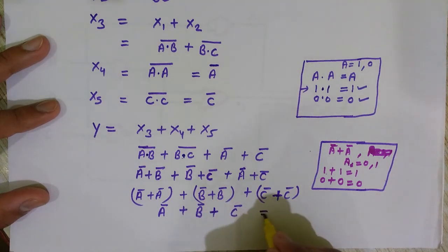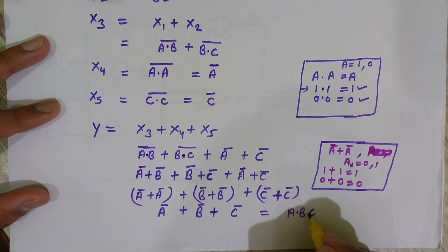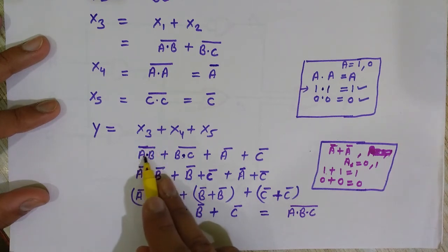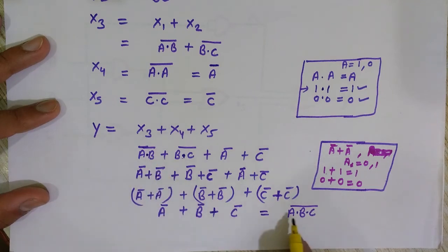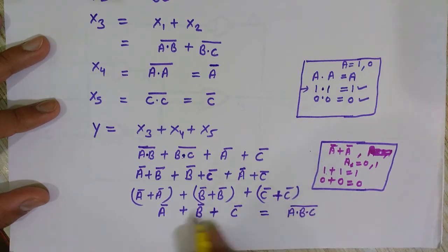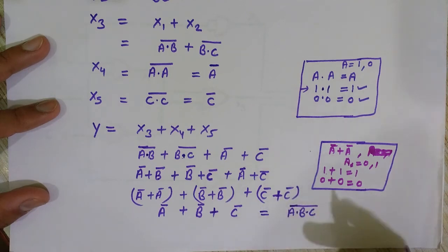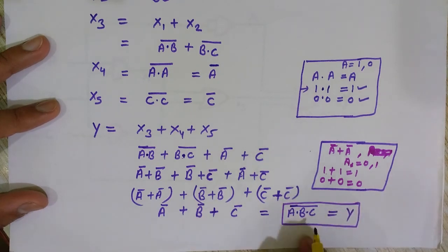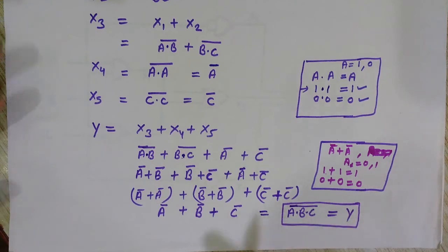Now Ā+B̄+C̄ can be written as (A·B·C)̄ by De Morgan's theorem in reverse — if you apply the complement to each term and change OR back to AND, you get (A·B·C)̄. Complement of complement cancels out, so the final answer is Y = (A·B·C)̄. I hope you understood; we found Y step by step through x1, x2, x3, x4, and x5.